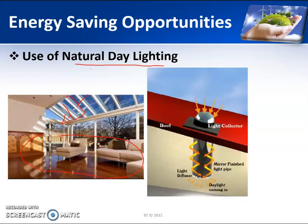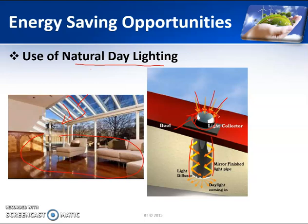Another possibility is that we can use light pipes. Light pipes are a reflective tube at the bottom side with a dome on the top side. Around 360 degrees the light reaches this dome, undergoes total internal reflection in the pipe, and then comes out through a diffuser. Thereby the room is completely lit.